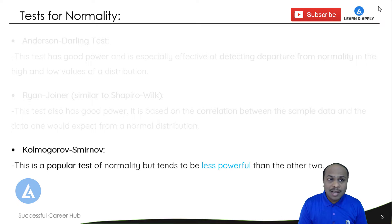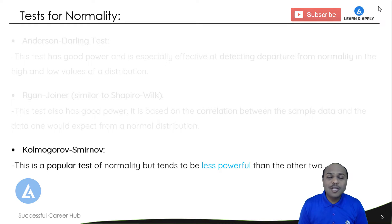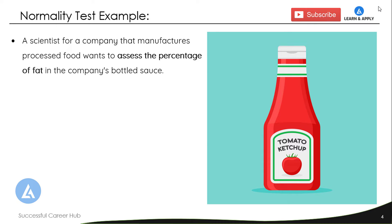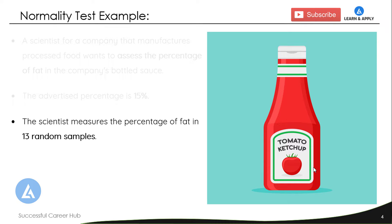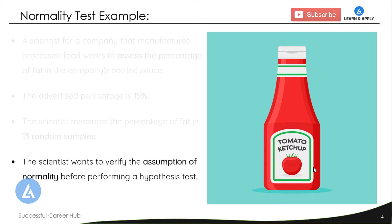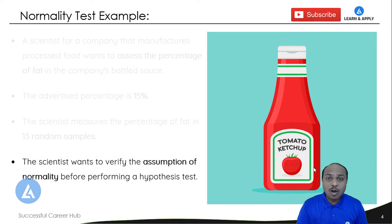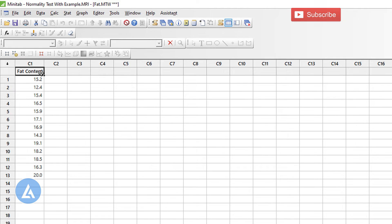Now let's take a practical example to understand how we can use Microsoft Excel, Minitab, and Sigma Excel to check whether our data follows a normal distribution. A scientist for a company that manufactures processed foods wants to assess the percentage of fat in the company's bottle sauce. The advertised percentage is 15%. The scientist measures the percentage of fat in 13 random samples and wants to verify the assumption of normality before performing any hypothesis testing.